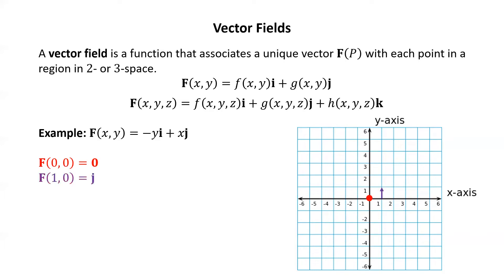Similarly, F of (1,0): plugging in 1 for X and 0 for Y, we get the vector 0i plus 1j, or just j. The vector j points straight up. Notice that the initial point for the vector in the XY plane is the point (1,0) — the input gives us the initial point of the vector, and we draw the vector starting from that point. In this case we start at (1,0) and draw the vector j, which goes one unit straight up parallel to the Y axis.